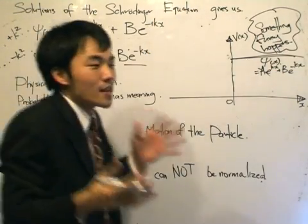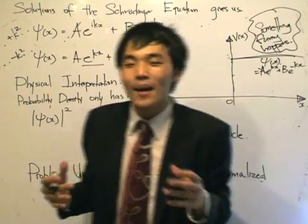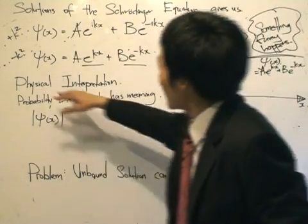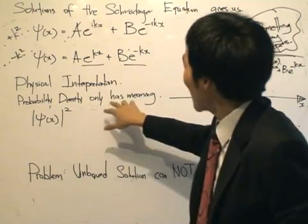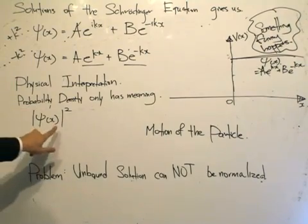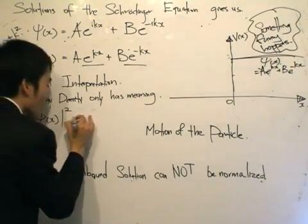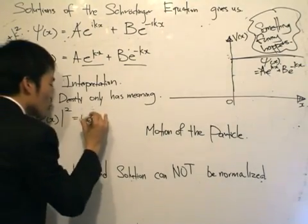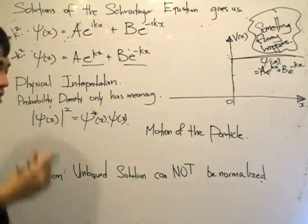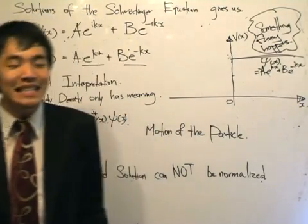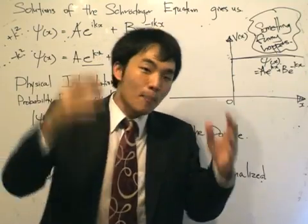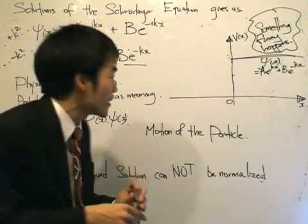The physical interpretation is called the probability density, which is the one that has physical meaning. The probability density is given by the wave function — take the magnitude squared — and it also equals the conjugate of the wave function multiplied by itself. The probability density reflects the indeterministic nature of the microscopic world: we can't exactly find where the particle is. We can only take a measurement, and this gives us a probability of where the particle is.